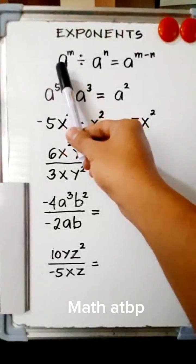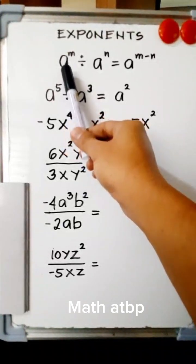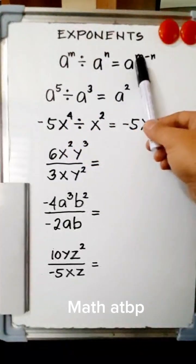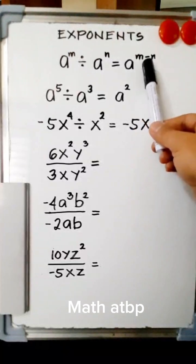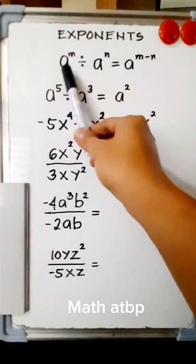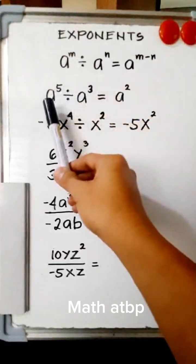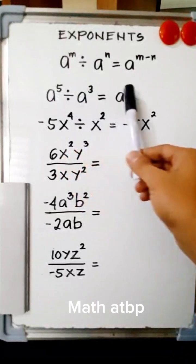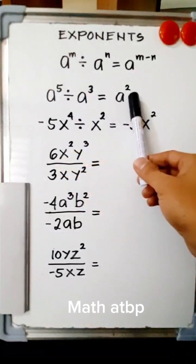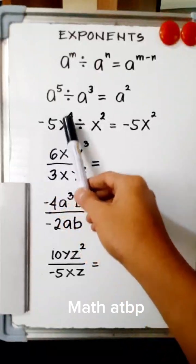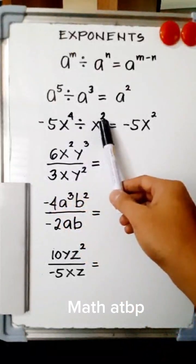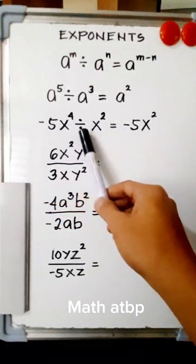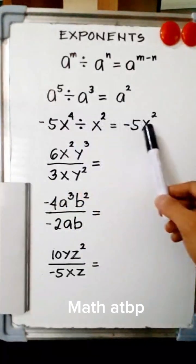Now we have division of terms. We have a raised to m divided by a raised to n — that equals a raised to m minus n. We subtract the powers if they have the same base. For example, a raised to 5 divided by a cubed: 5 minus 3 is 2, so we get a squared. Next, negative 5x raised to the 4th divided by x squared: negative 5 divided by 1 is negative 5, and x to the 4th divided by x squared gives x squared, since 4 minus 2 is 2.